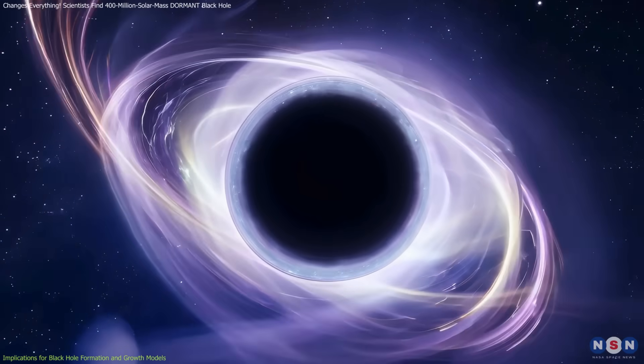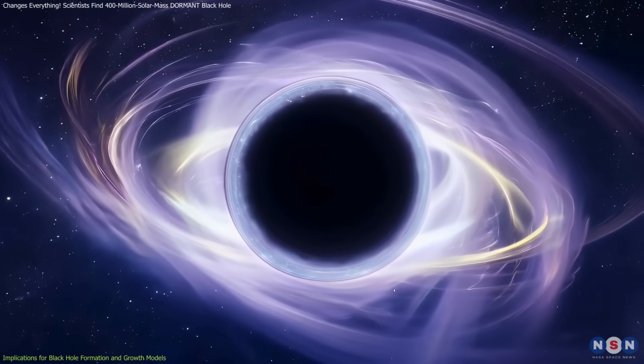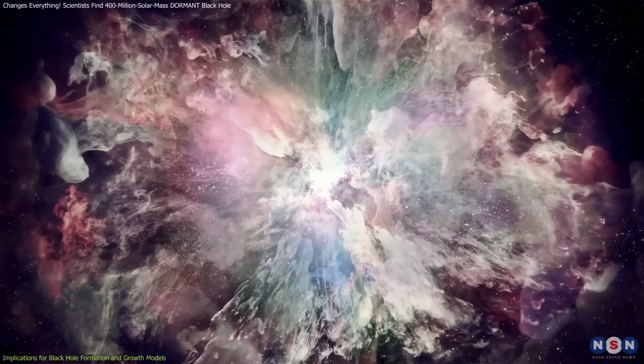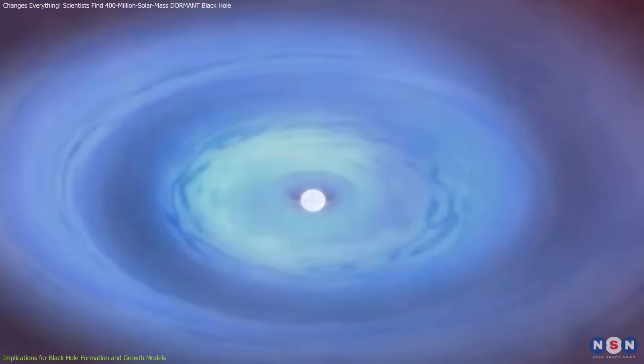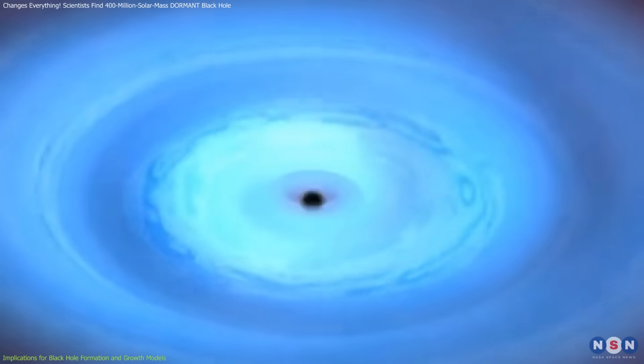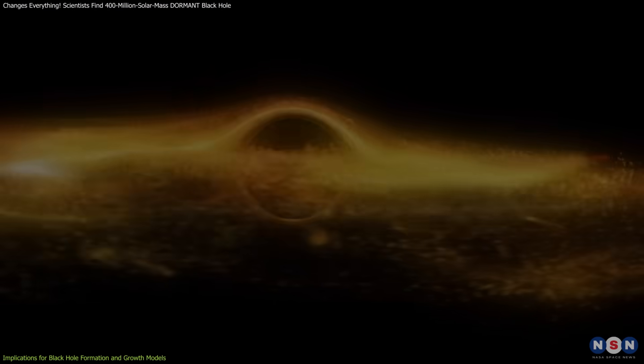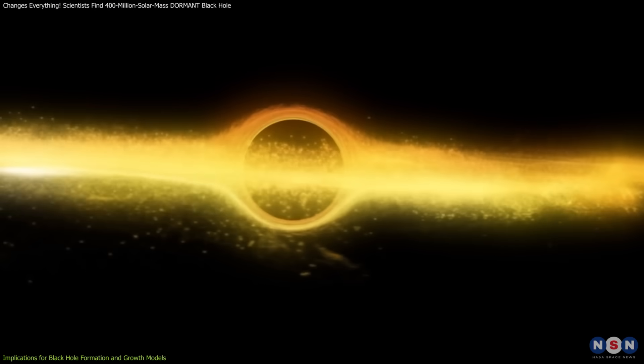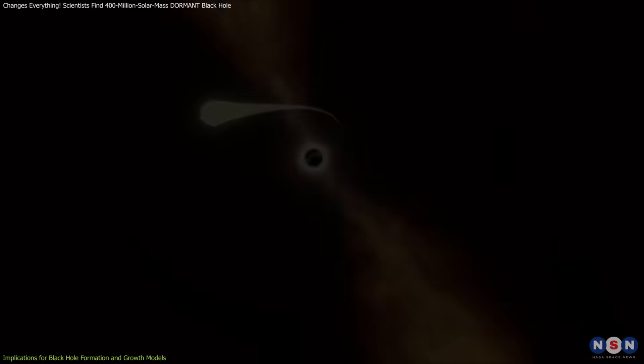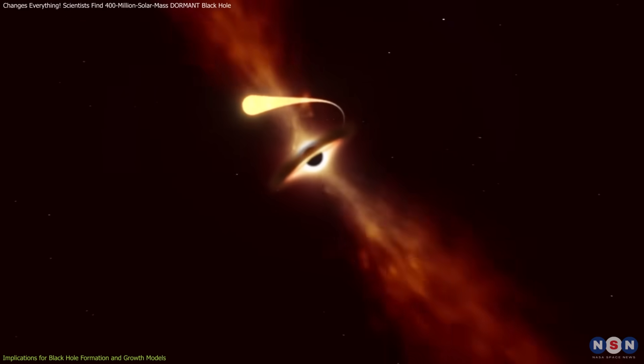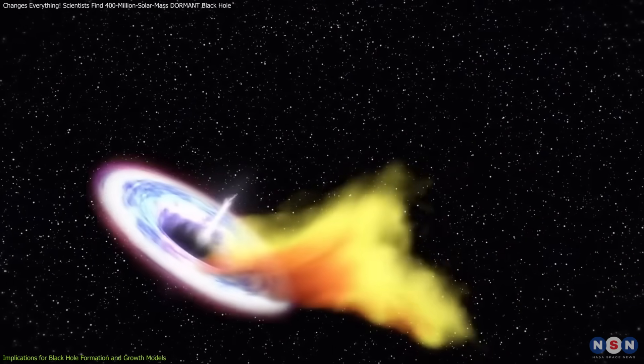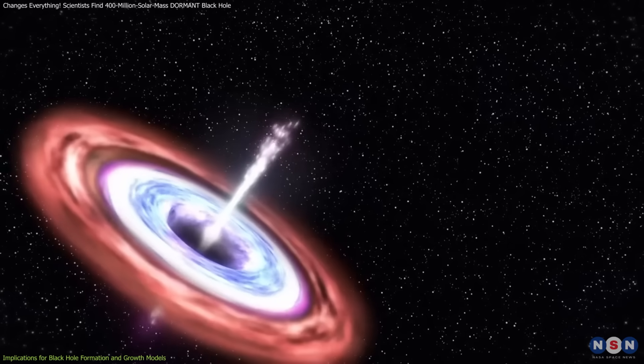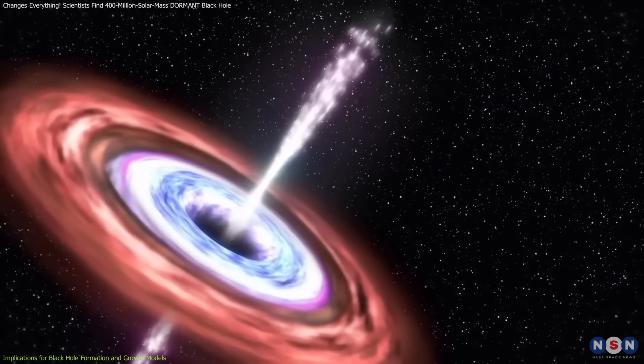Another possibility is that some black holes are born big. Instead of forming from the remnants of dying stars, they may emerge directly from massive gas clouds collapsing under their own gravity. This would bypass the slow process of accretion altogether, explaining their rapid appearance in the universe. Scientists are running simulations to explore these scenarios, and the findings could reshape our understanding of black hole origins.